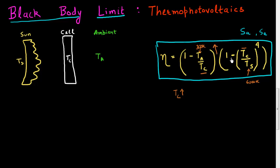On the other hand, the second term multiplying the first — which is (1 minus TC divided by TS) raised to the power 4 — will decrease as I increase TC. So I have these two oppositely behaving terms: one increasing with TC and one decreasing with TC. Clearly there must be an optimum temperature of the cell at which this expression is maximum.